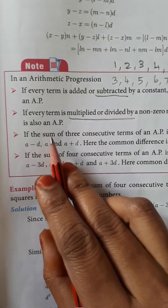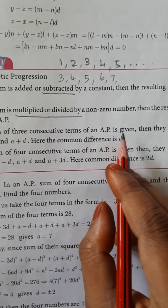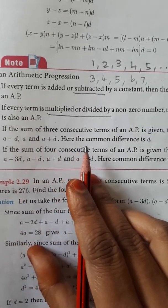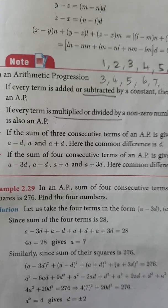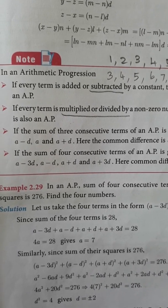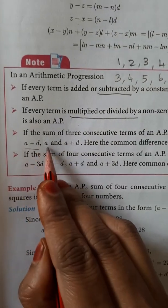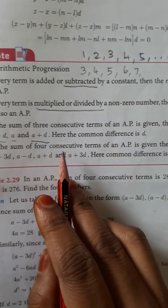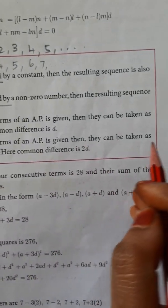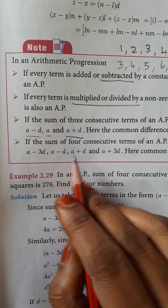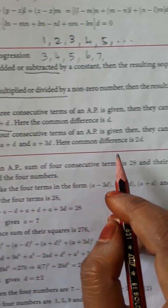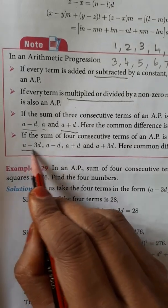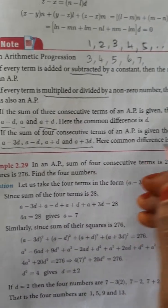If the sum of three consecutive terms of an AP is given, they can be taken as A minus D, A, and A plus D, where the common difference is D. If the sum of four consecutive terms of an AP is given, they can be taken as A minus 3D, A minus D, A plus D, and A plus 3D, where the common difference is 2D.